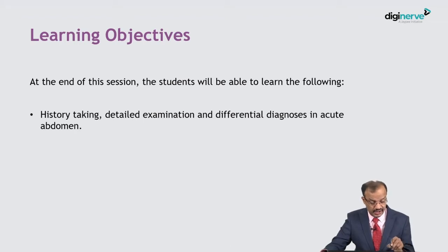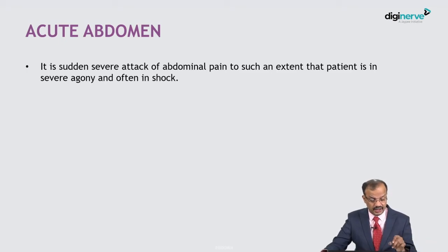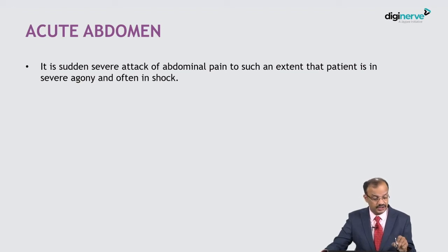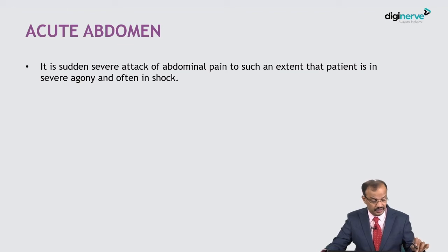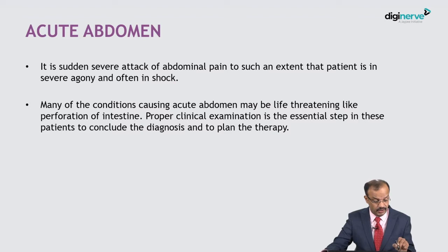What you are learning is history taking, detailed examination, and differential diagnosis in acute abdomen. Acute abdomen is a sudden severe attack of abdominal pain to such an extent that the patient is in severe agony and often in shock, and invariably you have to admit such a patient. Many conditions causing acute abdomen may be life-threatening, like perforation of the intestine. Proper clinical examination is an essential step to conclude the diagnosis and plan therapy.